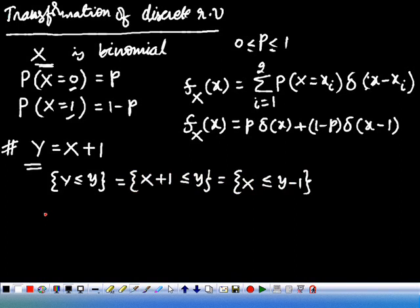Then take the probability on both sides. The probability of y less than or equal to y is F_Y of y, which equals F_X of y minus 1.